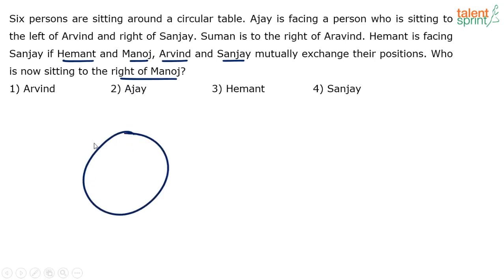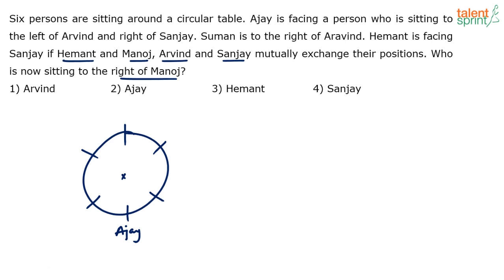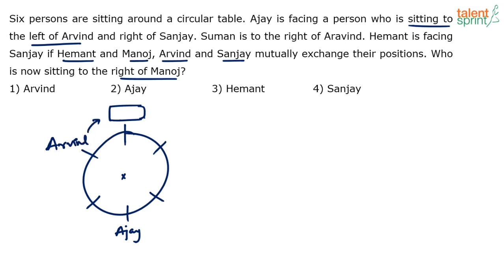Draw a circular table first. We have six persons, so mark six positions. Ajay is seated at one position — all of them are facing the center. If nothing is specified, assume all persons face the center. Ajay is facing a person; that person is sitting to the left of Arvind. Left of Arvind means clockwise, so Arvind has to come at the corresponding position.